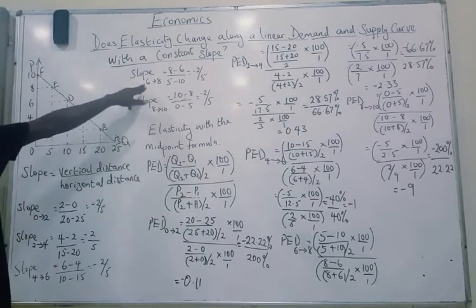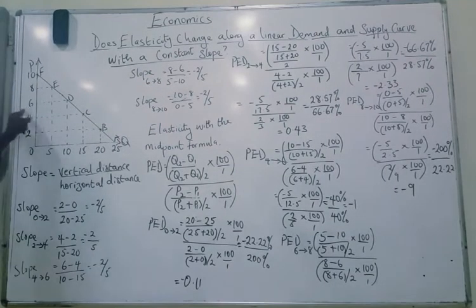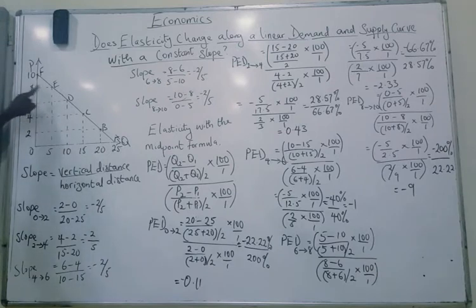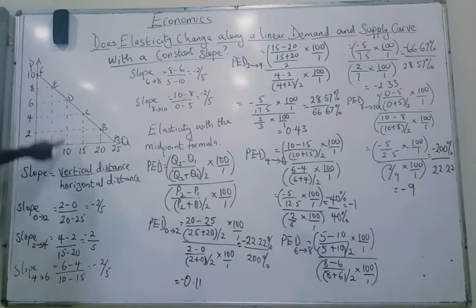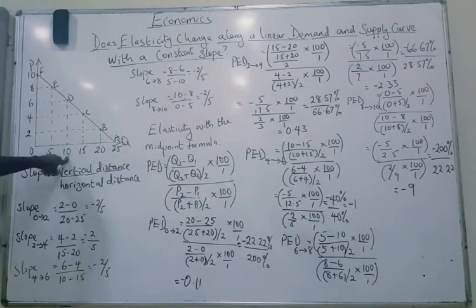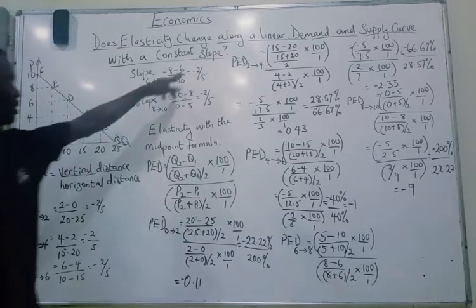The slope from price 6 to price 8: price 6 has quantity demanded of 10, and price 8 has quantity demanded of 5. So we have 8 minus 6 divided by 5 minus 10, giving us minus 2 over 5 again.